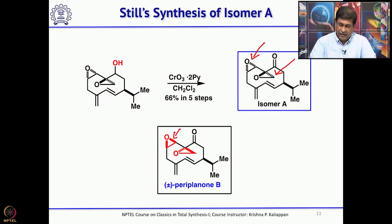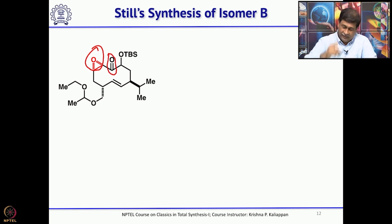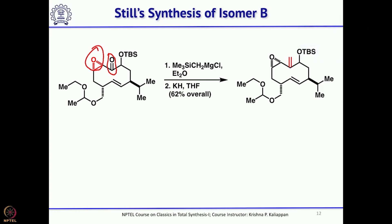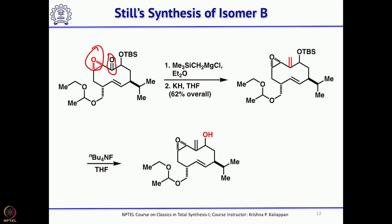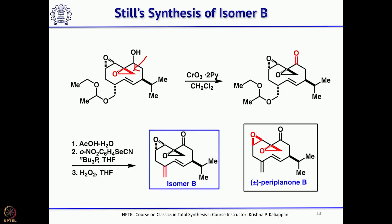In the correct natural product, one epoxide is beta and the exocyclic CH2 is also beta. Still did not know whether the first epoxide was correct, so he worked around to get the epoxide from the ketone. He performed Peterson olefination to introduce the double bond, then removed the TBS group to obtain an allylic alcohol which could direct the epoxidation. After treatment with the epoxidizing agent, he got the CH2 in the beta orientation. Oxidation to the ketone followed by the same three-step protocol to introduce the double bond was carried out.